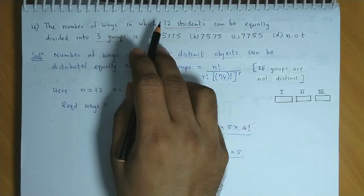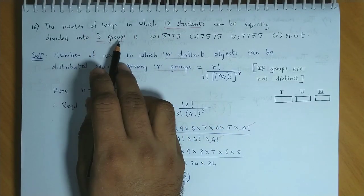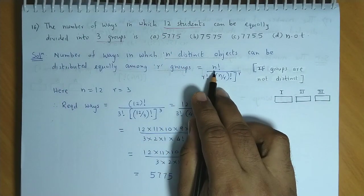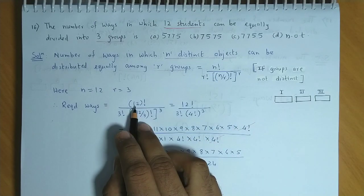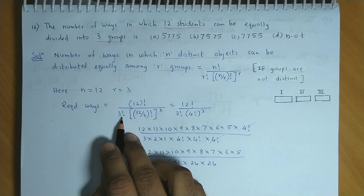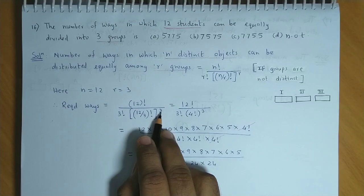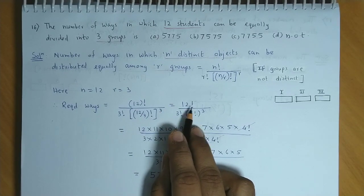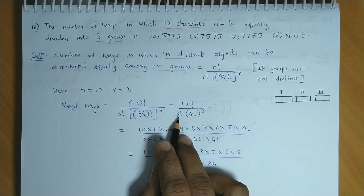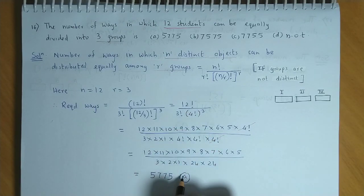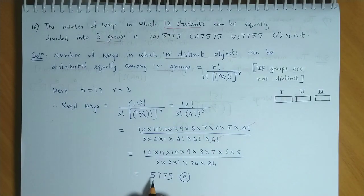Here n is 12 and the number of groups is 3. So the formula gives: 12! / (3! × (12/3)!³) = 12! / (3! × 4!³). Simplifying this gives 5775, which is option A.